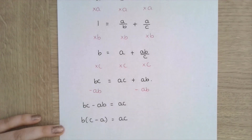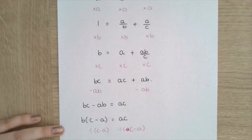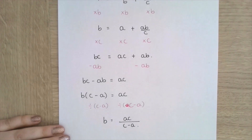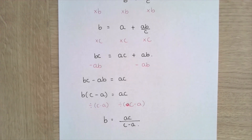And then I can just divide by c minus a on both sides, so b is equal to ac all over c minus a. I'm really sorry for that confusion — I just thought rather than going a bit crazy with that fraction, it would be better to start again.